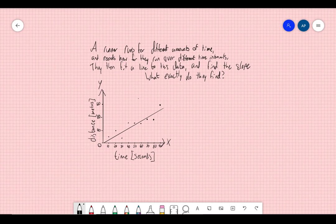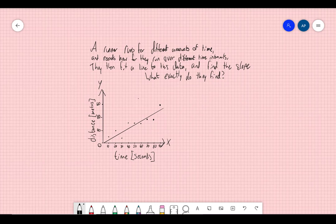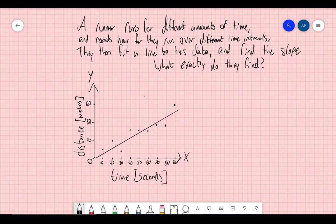So let's come over to here. I've made a cute little word problem. A runner runs for different amounts of time. They record how far they run over the different time intervals. They then fit a line to this data, and they find the slope. And what exactly do they find? So let's look at the graph first and make sure we get it. We have a scatter plot. And all these dots are different data points for different time intervals.